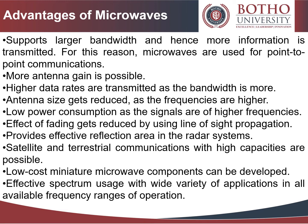Microwave links support larger bandwidth, and hence more information is transmitted — this is why microwaves are used for point-to-point communications. More antenna gain is possible, higher data rates are transmitted, and antenna size gets reduced as frequencies are higher. Low power consumption occurs as signals are of higher frequencies, and the effect of fading is reduced by using line-of-sight propagation. They provide an effective reflection area in radar systems, and satellite and terrestrial communications with high capacities are possible. Low cost miniature microwave components can be developed, and there is effective spectrum usage with a wide variety of applications.